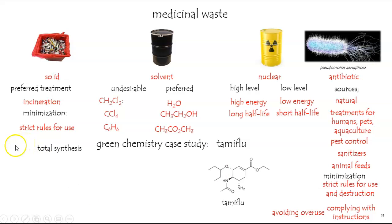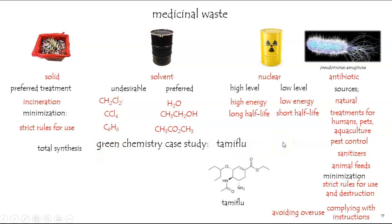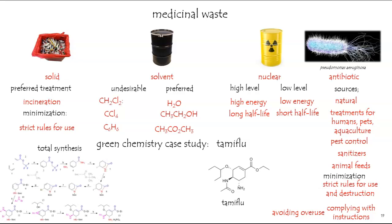Let's complete the study with a look at a case where a drug was originally synthesized in an environmentally unfriendly way and then evolved to be synthesized in a more green, environmentally friendly way. We're going to focus on Tamiflu, shown here. It's a very complex structure to make because it has three contiguous chiral centers that must have absolute stereochemistry — otherwise it won't function.